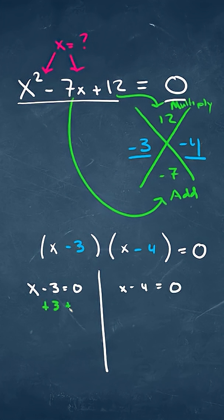We can add 3 on both sides for this one, add 4 on both sides for this one, and that's going to give us an x is equal to 3, and x is equal to 4. And these would be our two answers.